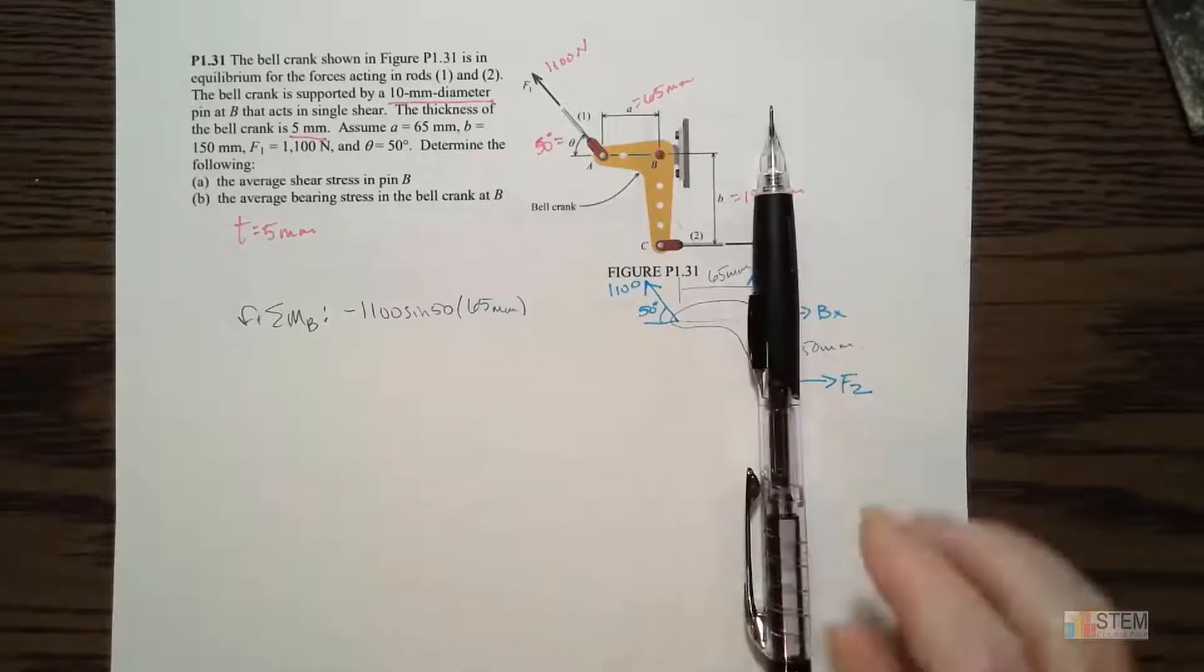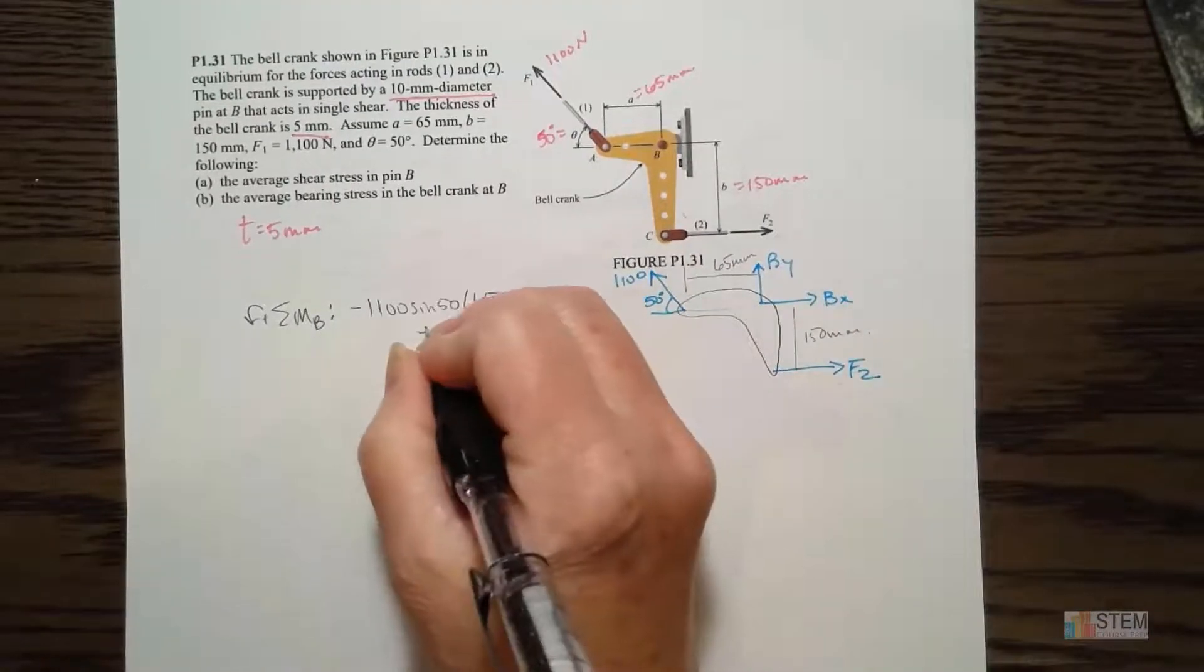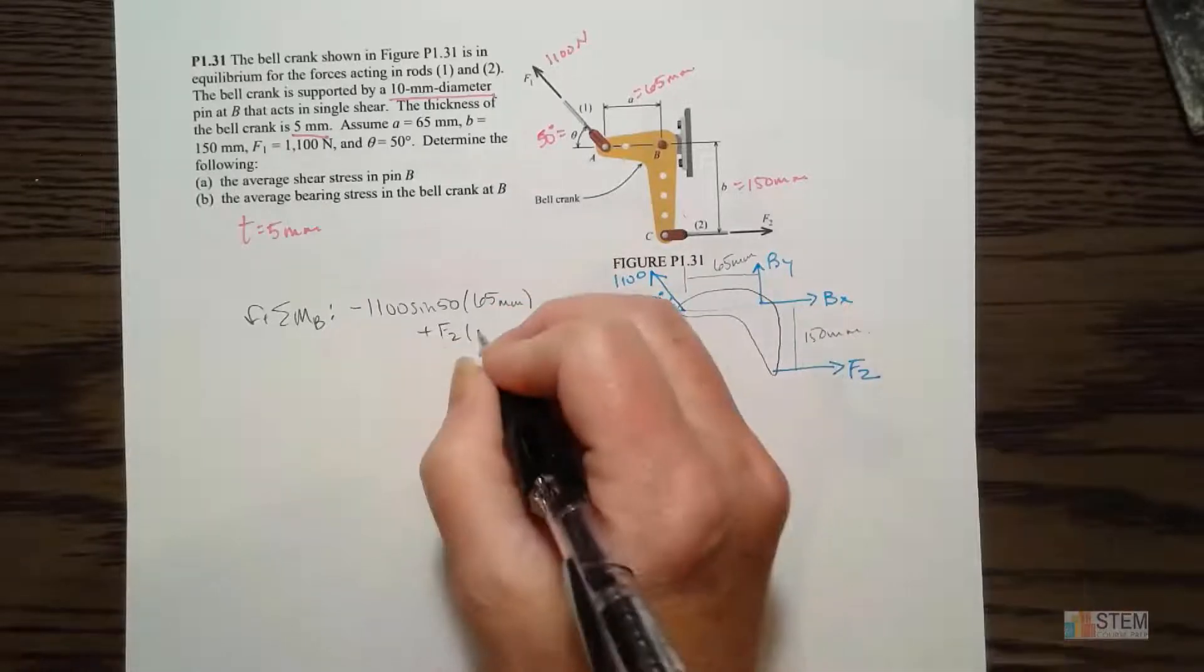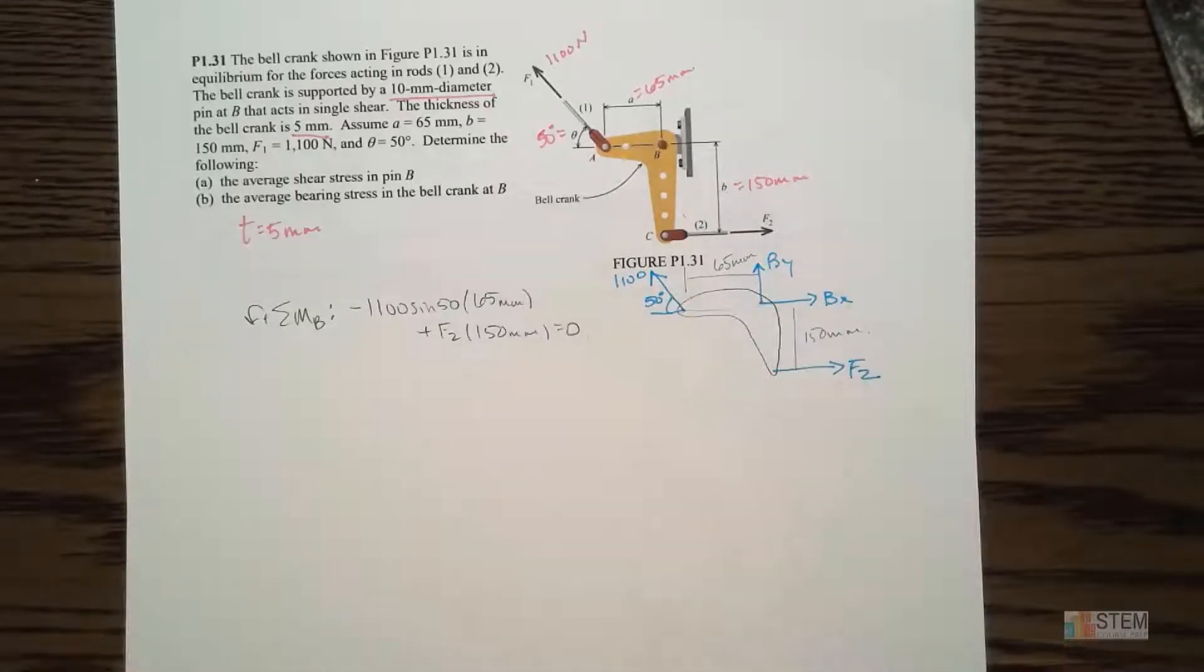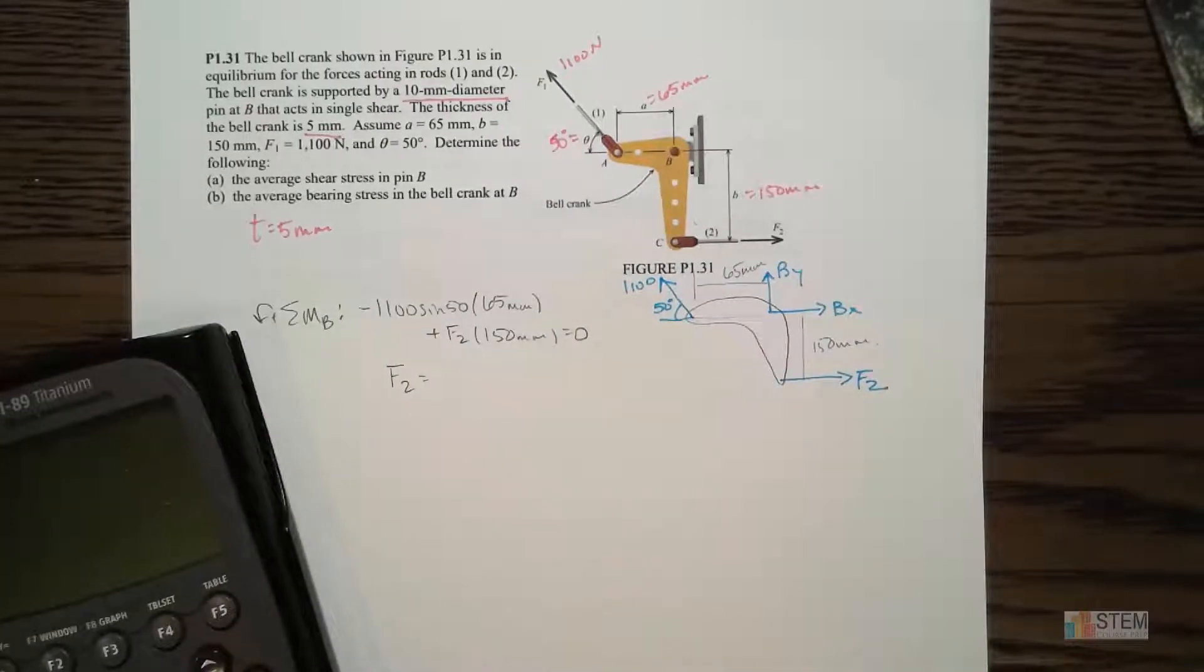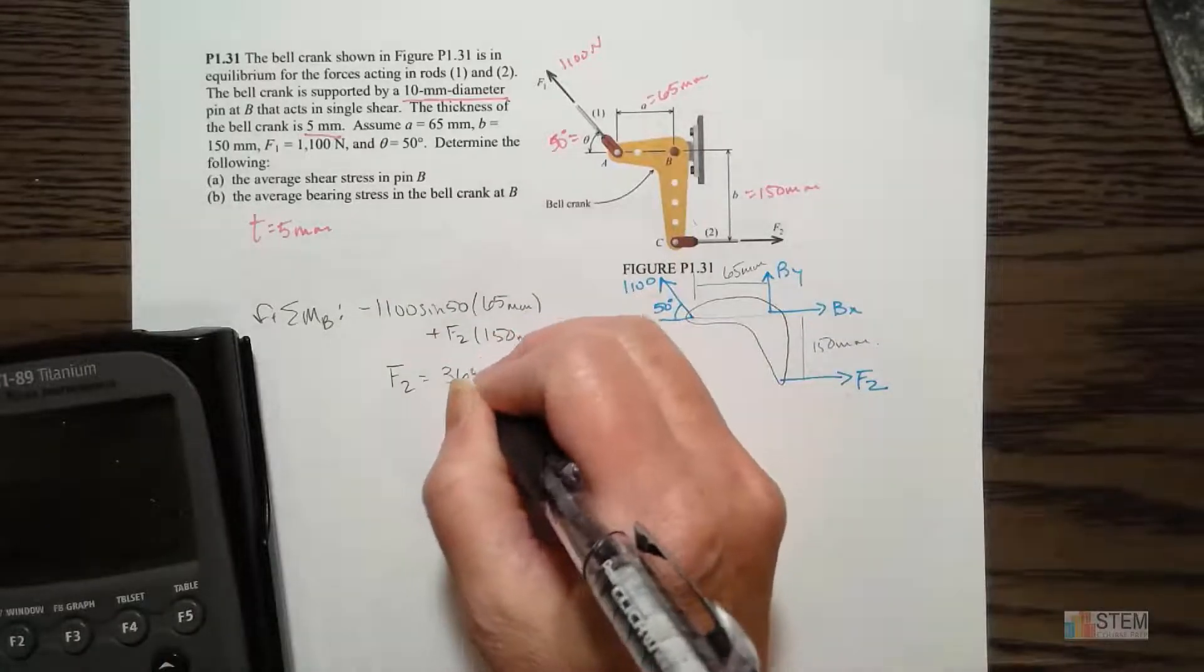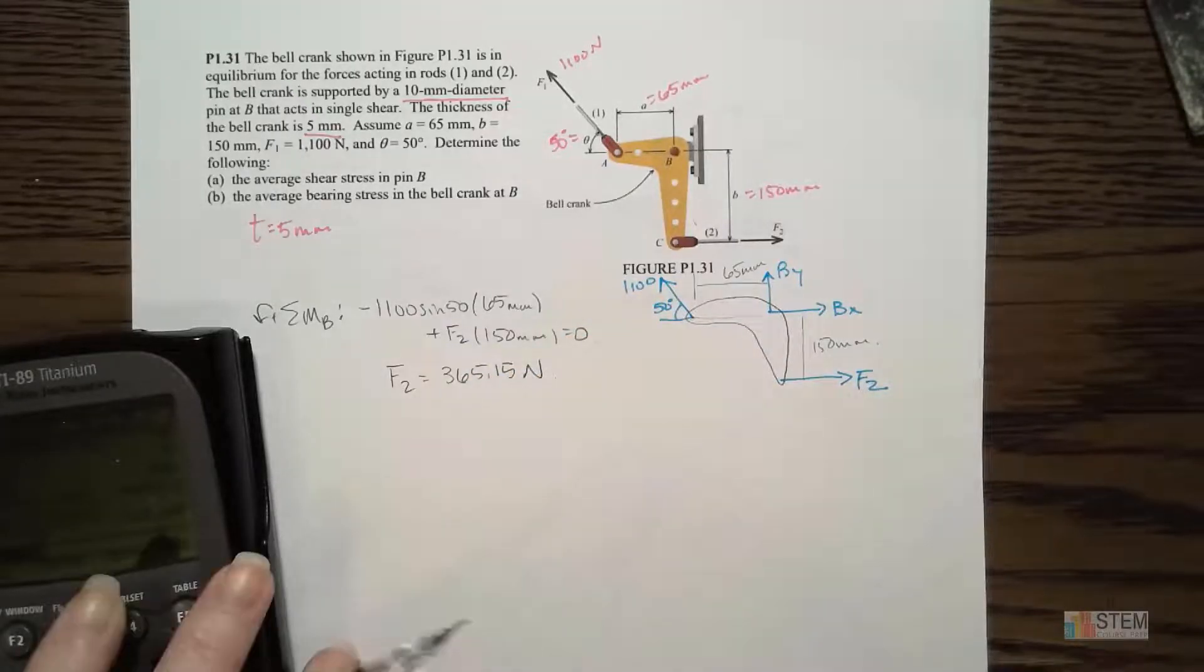Now, this one is going to be clockwise, so that's positive. Let's put it down here. So we're going to have F2 times the distance, right here, 150. It's perpendicular. And then that's it, because BY, BX, those go through point B, so they don't create a moment. So now we can find F2. So that's going to be a positive 365.15, and that'll be Newtons. So that looks good there.